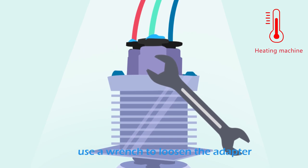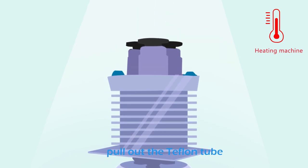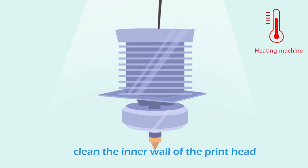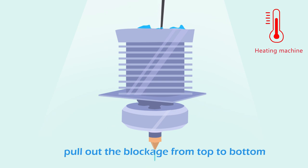Use a wrench to loosen the adapter. Pull out the Teflon tube, then use a large thimble to repeatedly clean the inner wall of the printhead. Pull out the blockage from top to bottom.